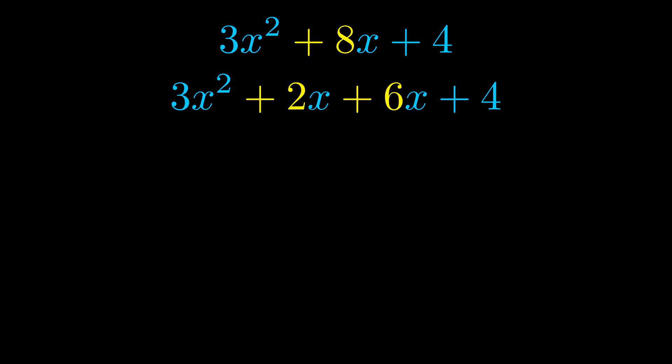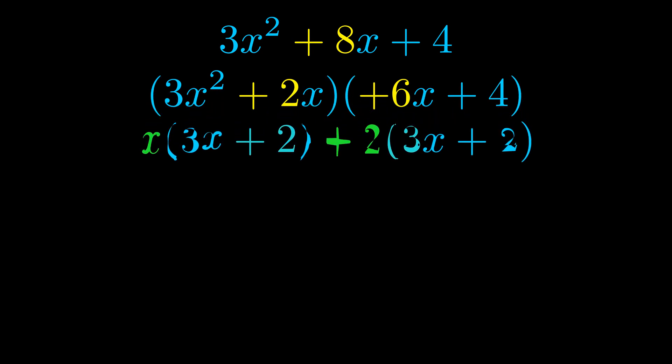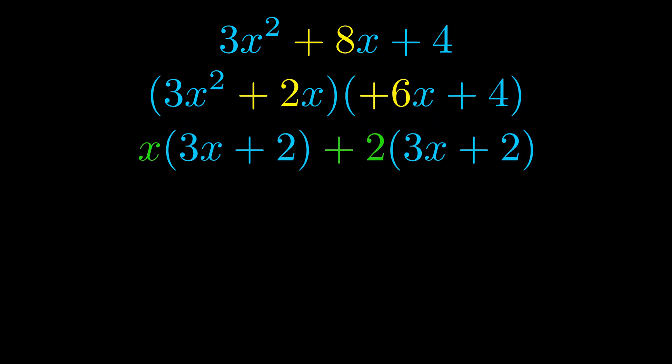Once we've done this, we go ahead and put parentheses around the first term and the last term, and we do that so that we can take the greatest common factor out of both terms. We can see the greatest common factor is now outside in green.